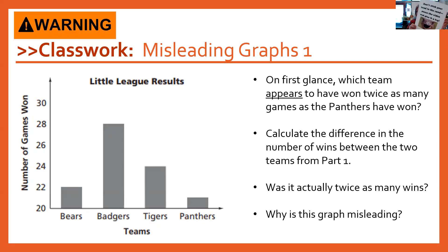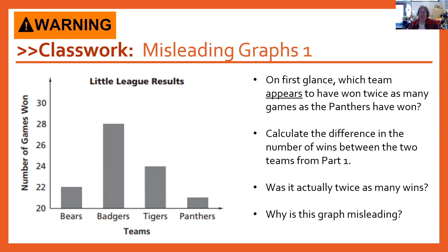Hopefully you paused the video and gave that a try. So at first glance, which team appears to have won twice as many games as the Panthers? The Panthers is this last bar on the right, and the team that looks like it has maybe twice as tall a bar is probably the Bears. Now calculate the difference in wins between the two teams. It looks like the Panthers won about 21 games and the Bears probably won about 22. So the Bears won one more game than the Panthers. Was it actually twice as many wins?